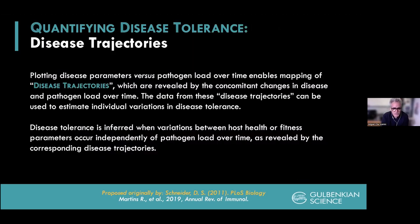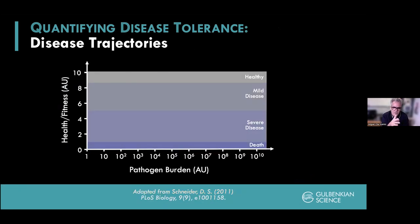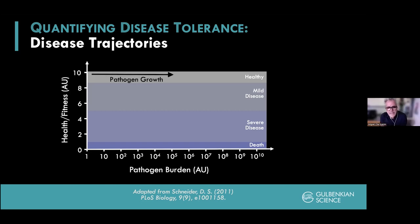Another way of looking at this, put forward by David Schneider at Stanford, relates to disease trajectories. On the y-axis, 10 is maximum health and 0 is death; we plot this against pathogen burden. As the pathogen starts growing, until about 10⁵ CFUs for bacteria there's no reduction in health or fitness. After that point, health can be reduced until a second inflection point between mild and severe disease — this is the product of resistance mechanisms. These trajectories inflect to the left because immune-driven resistance mechanisms are operating, reducing pathogen burden, but with a tremendous trade-off as disease becomes more severe.